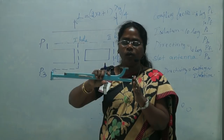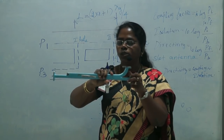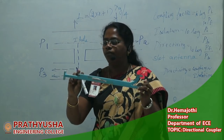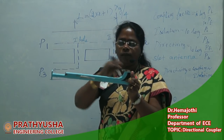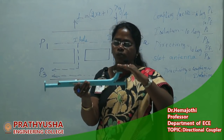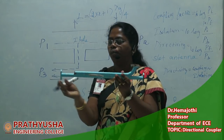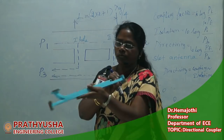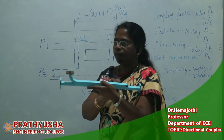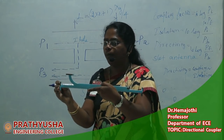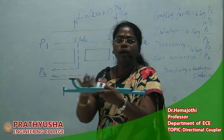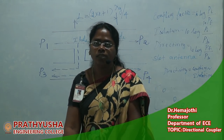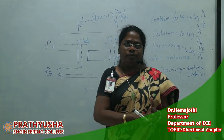We can also connect the directional coupler in the opposite direction. Whenever the input is given to port 2, the coupled power can be taken from port 4. Similarly, whenever the input is given through port 4, the coupled output is taken from port 2, and all other remaining output can be taken accordingly. This is how we explain the directional coupler. Thank you.